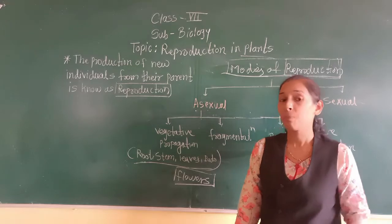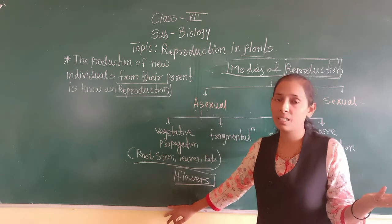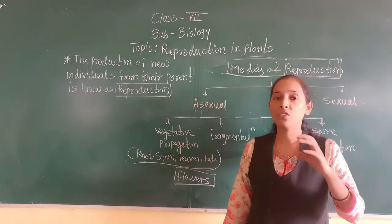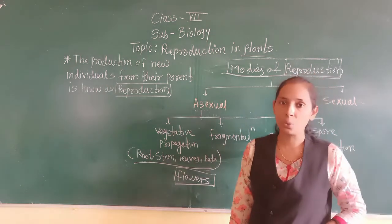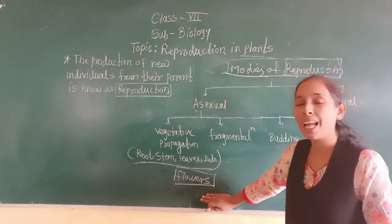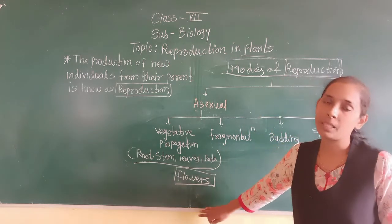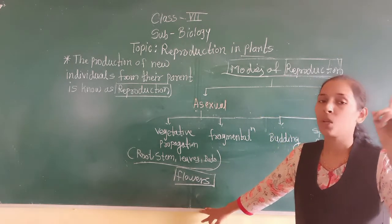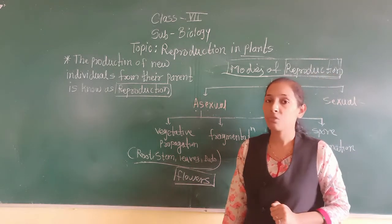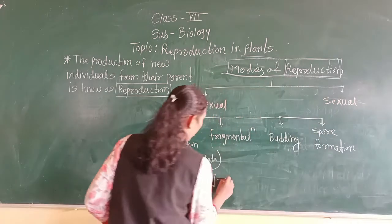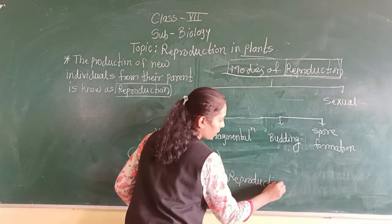The flower plays a vital role in the process of reproduction. You may have seen that if there are fruit trees in your house, the trees first bear flowers and after that the flowers get converted into fruit. It means the flower helps to produce fruits, which help to produce seeds, and with the help of those seeds we can grow new plants. So the flower is a very important part of the plant which helps in the process of reproduction.